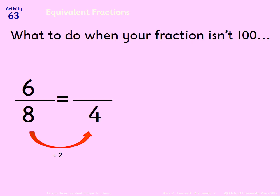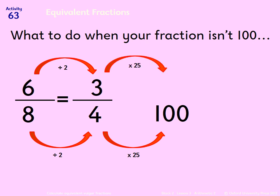Instead of 6 eighths, I could change it to 3 quarters. Once I've changed it to 3 quarters, it's much easier to change into 100. How many 4s in 100? It's 25, so I times the denominator by 25 and do the same for the numerator. So I have 75 over 100, and then it's quite simple to change that into a decimal and a percentage.